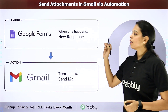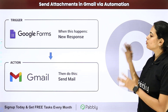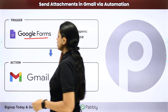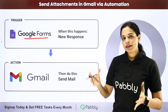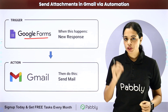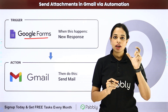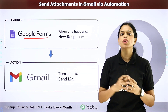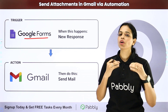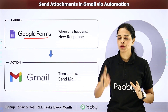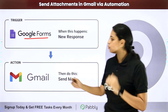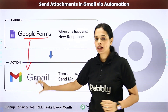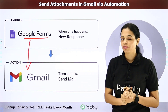In this video, we are going to see how to send attachments in Gmail via automation. So let's say that you're using a form builder application like Google Forms. Every time you receive a response with an email address, you want to send a brochure, a project report, or any particular attachment to the user. For this, you will have to set up some integration between Google Forms and Gmail, and the same thing can be done using Pabbly Connect software.